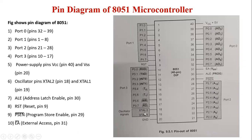Next is ALE, which is called Address Latch Enable, at pin number 30. The AD0 to AD7 lines are multiplexed. To demultiplex these lines and obtain the lower half of an address, an external latch and the ALE signal of 8051 is used.